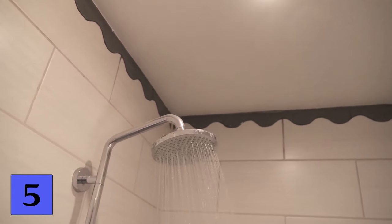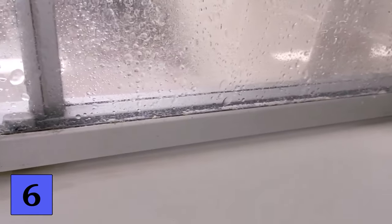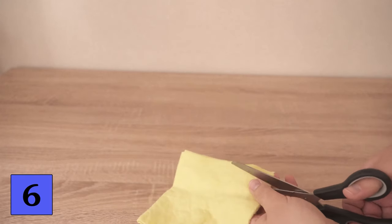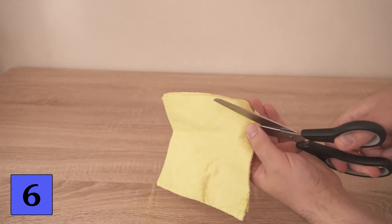But limescale is usually not only a problem at the shower head, but also at the shower door. Here too we usually find a lot of limescale residue and maybe even mold. I'm going to show you how to get rid of this. To do this take an old cleaning cloth and cut it into thinner strips, as you can see here.